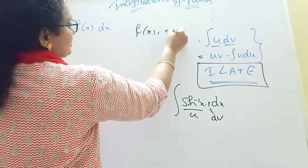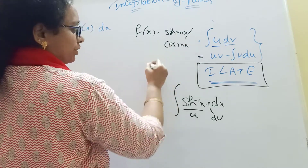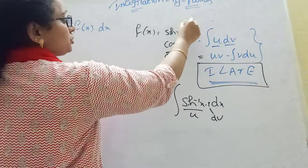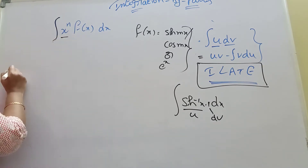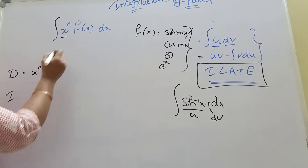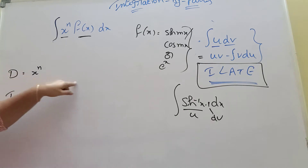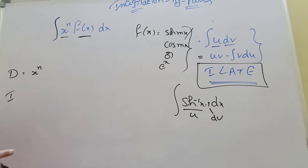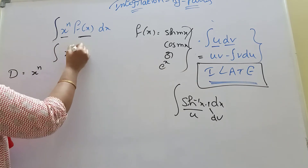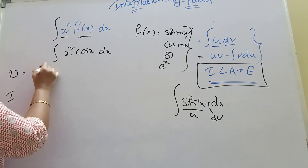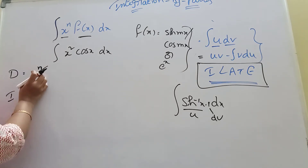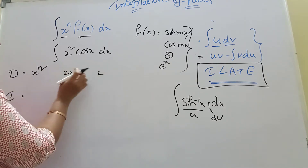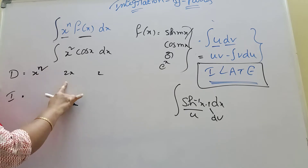Functions like sine mx, cos mx, and e to the power x are in the bottom row as a shortcut method. If you have an algebraic function, the derivative of x and its integration are equal to the first function's derivative. For example, integration of x squared times cos x: x squared is u and cos x is dv. The derivative of x squared is 2x.